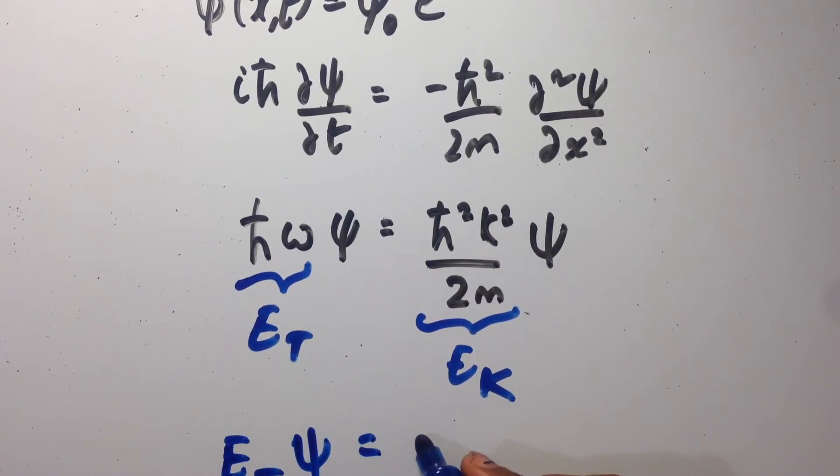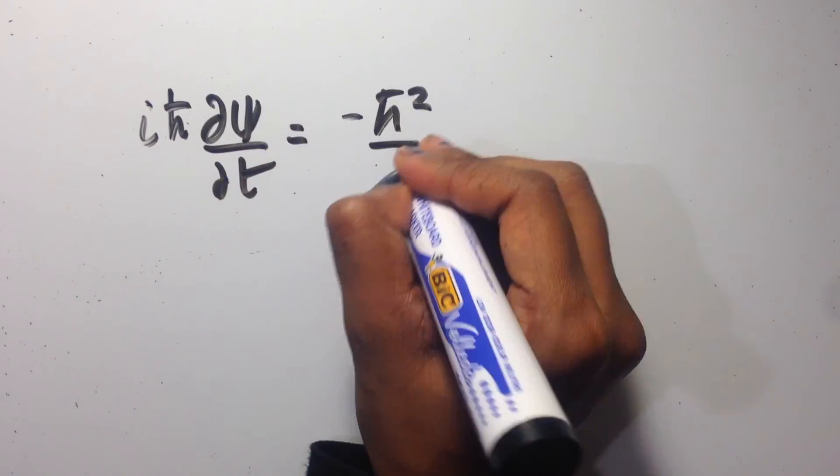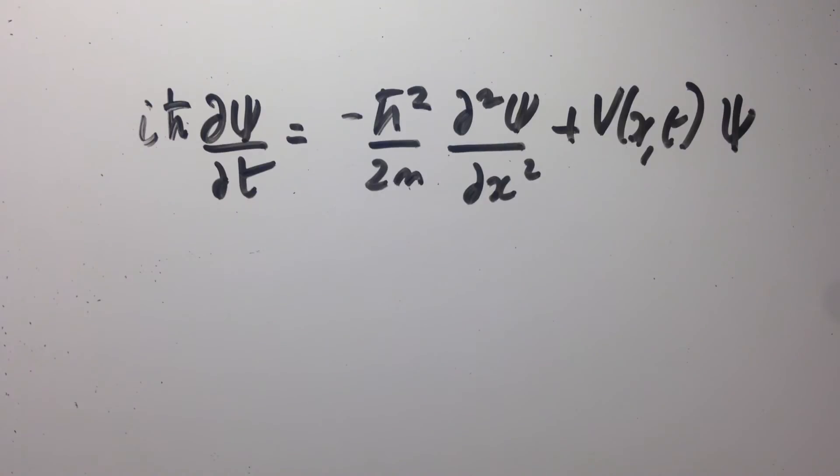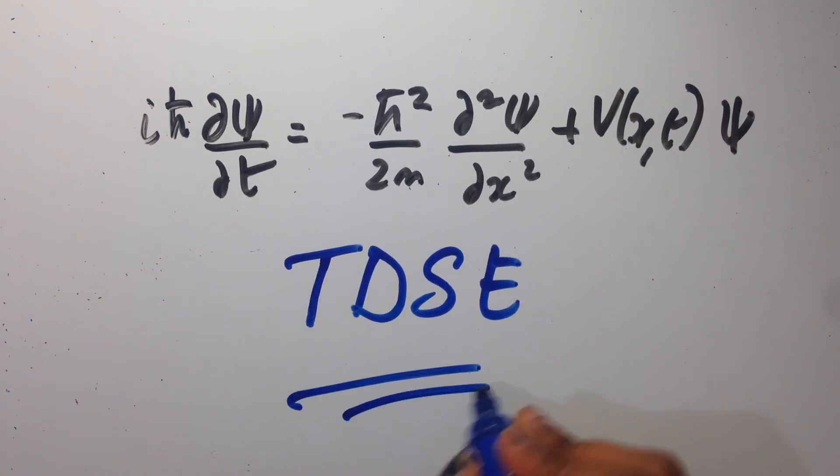To obtain a more general solution for a particle with kinetic and potential energy we will write the total energy as being equal to the kinetic plus the potential energy of the particle. Adding on our potential term to our free particle equation we arrive at our time dependent Schrödinger equation.